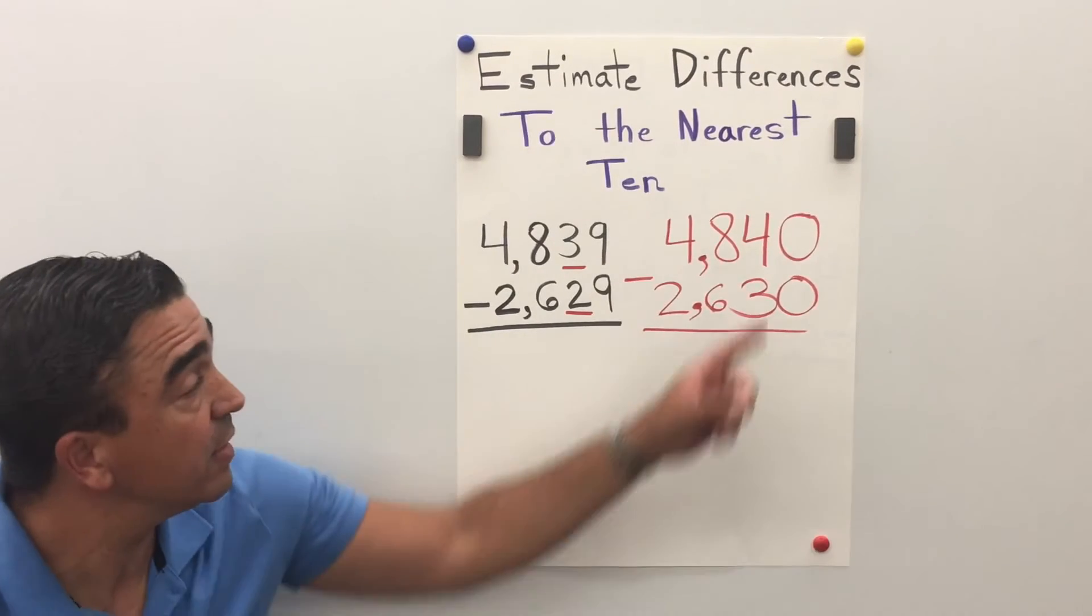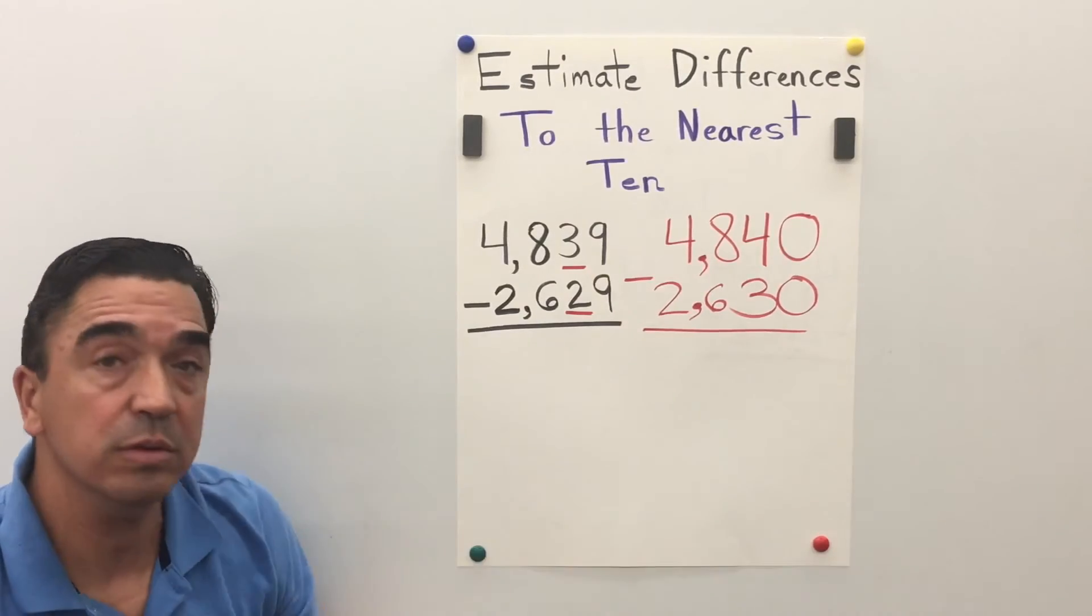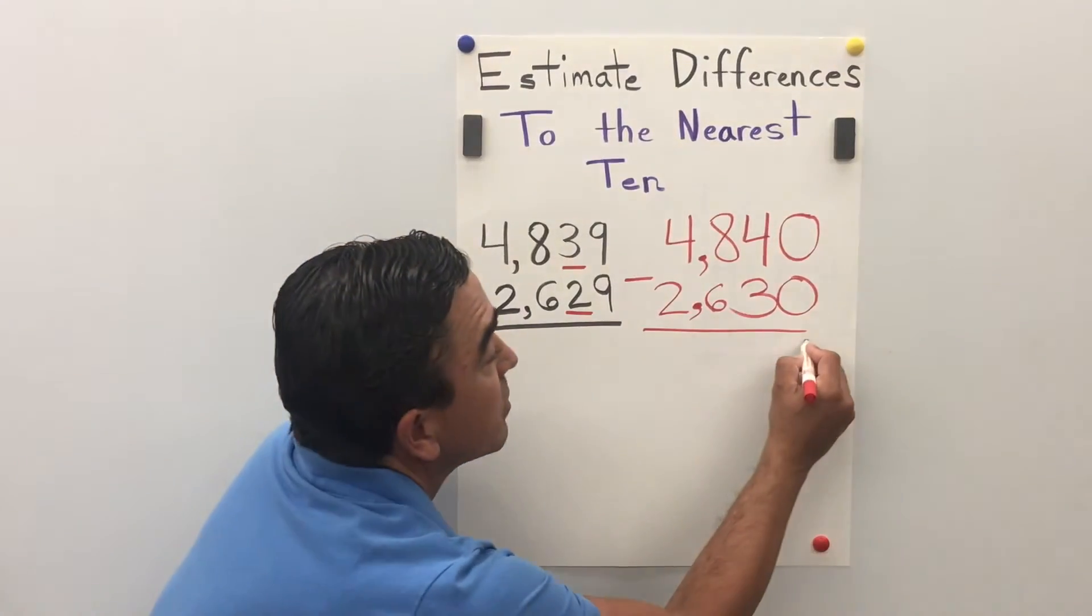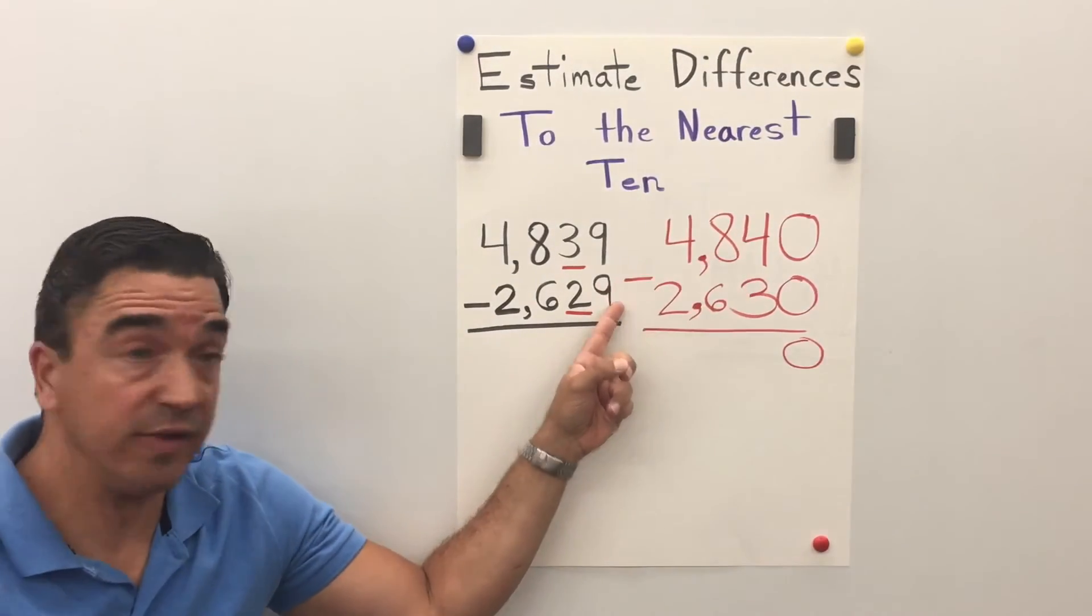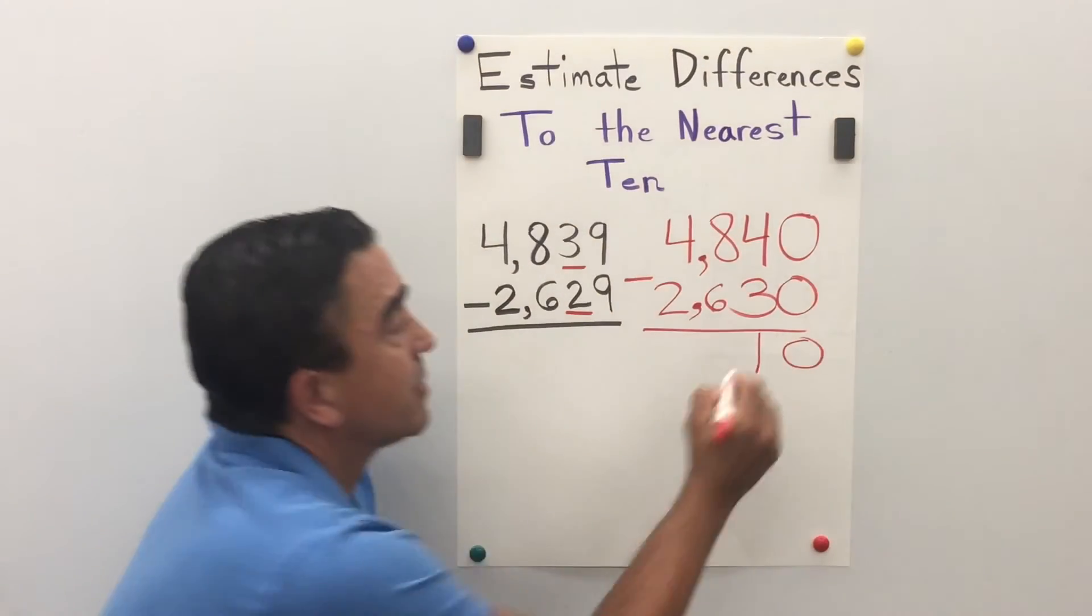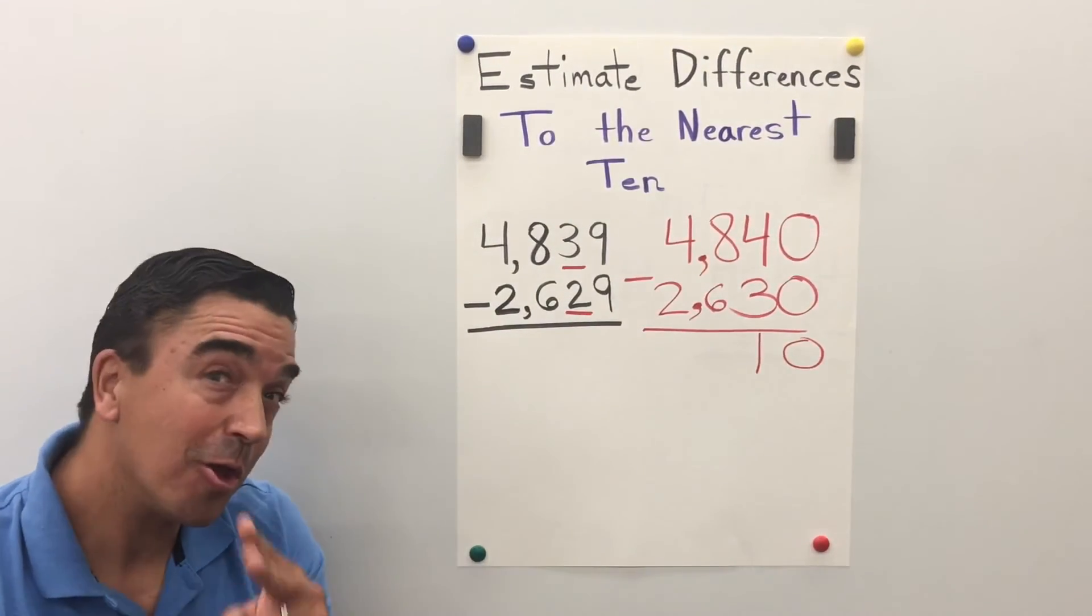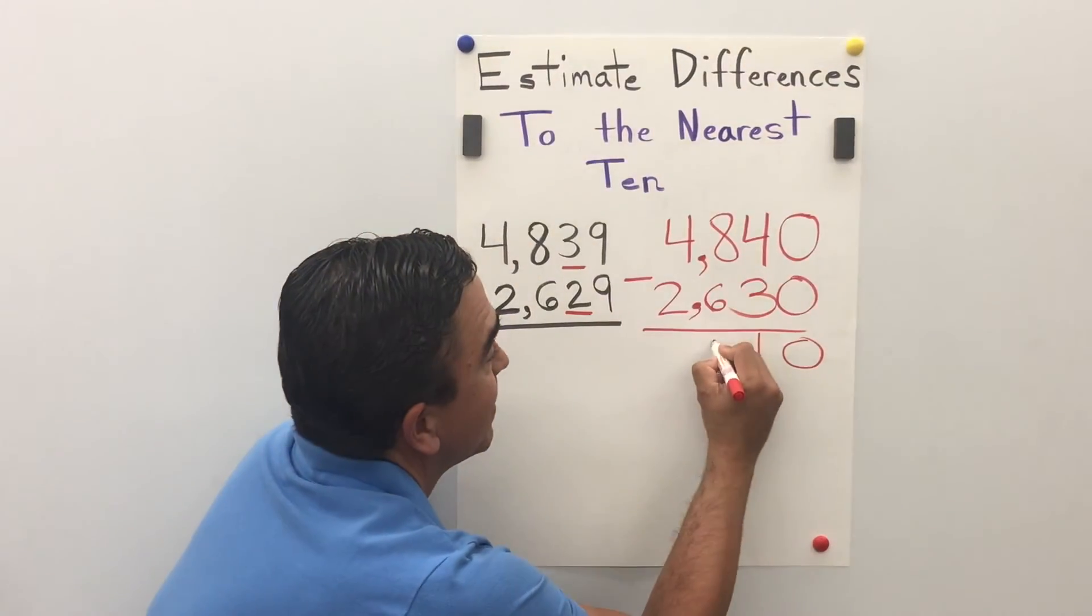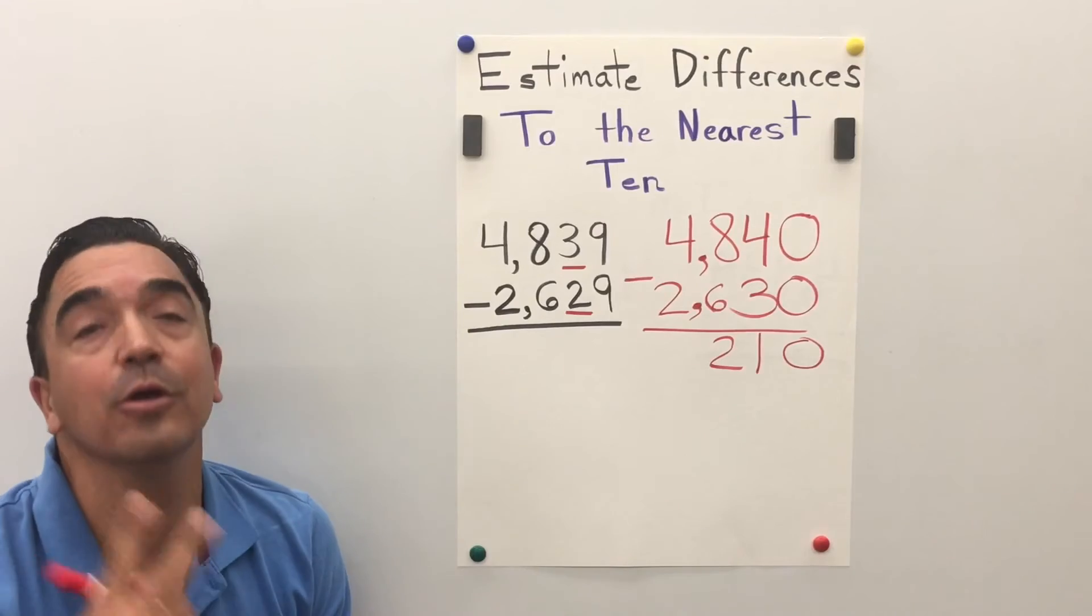Now, we're ready to subtract. Zero minus zero, four minus three is one, eight minus six is two, four minus two is two.